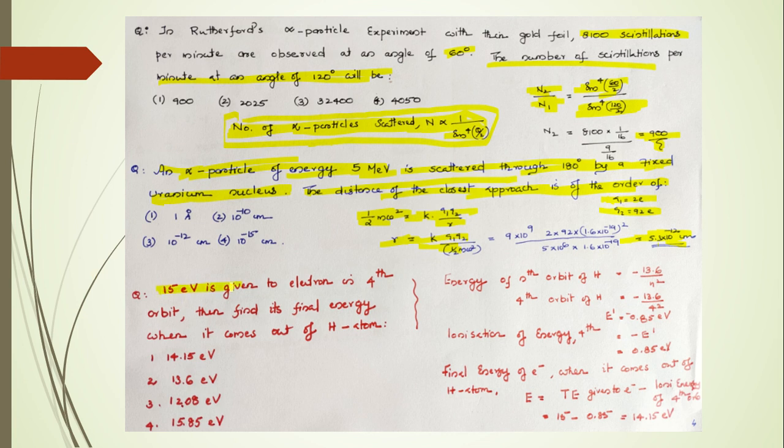Another question: 15 electron volt is given to electron in fourth orbit. Then find its final energy when it comes out of the hydrogen atom. The energy of nth orbit of hydrogen is minus 13.6 by n square. The fourth orbit, we simplify it: minus 0.85 electron volt. Then ionization energy of fourth one, that is minus E, so that is equal to 0.85 electron volt. But here, the final energy of electron when it comes out of the hydrogen atom should be equal to - some energy is used for ionizing, and hence the total given energy minus that value. We get the answer as 14.5 electron volt.